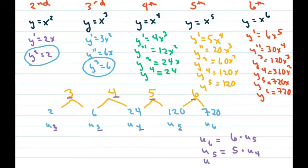So basically your formula is going to be u sub n equals n, because these numbers match, times the previous term, which is going to be u sub n minus 1. And that would be your formula.